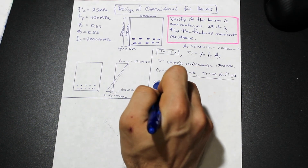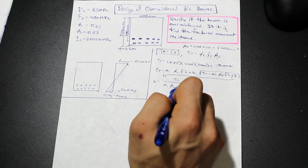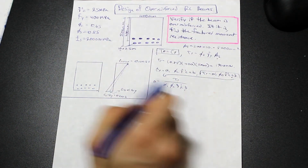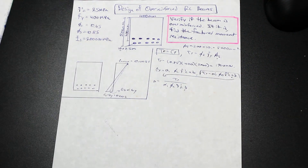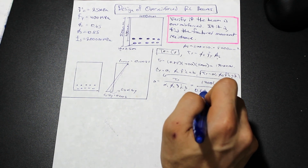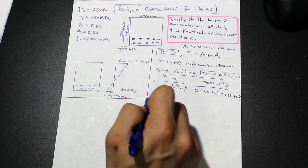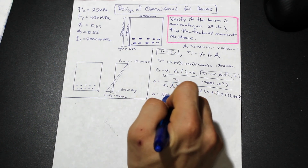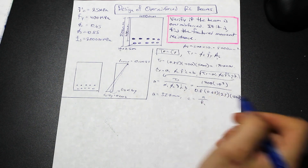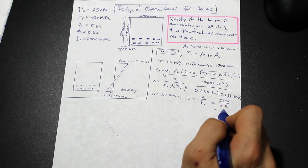Isolating for 'a': a = Tr / (α₁ · φ_c · f'c · b). We assume α₁ = 0.8 and φ_c = 0.65, f'c = 25 MPa, and b = 400 mm. That gives a = 327 mm. Then c = a / β₁, where β₁ = 0.9, so c = 327 / 0.9 = 363 mm.